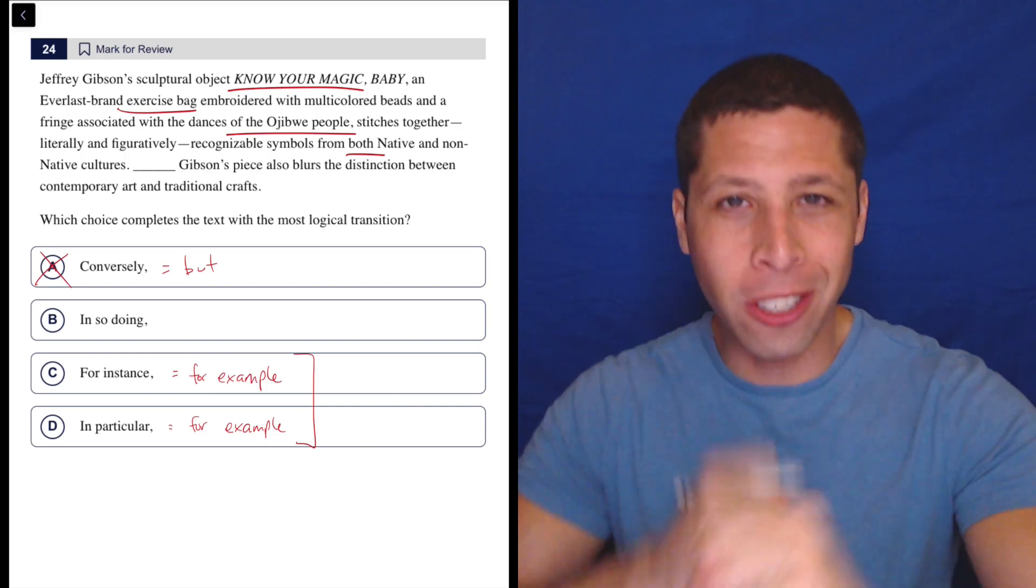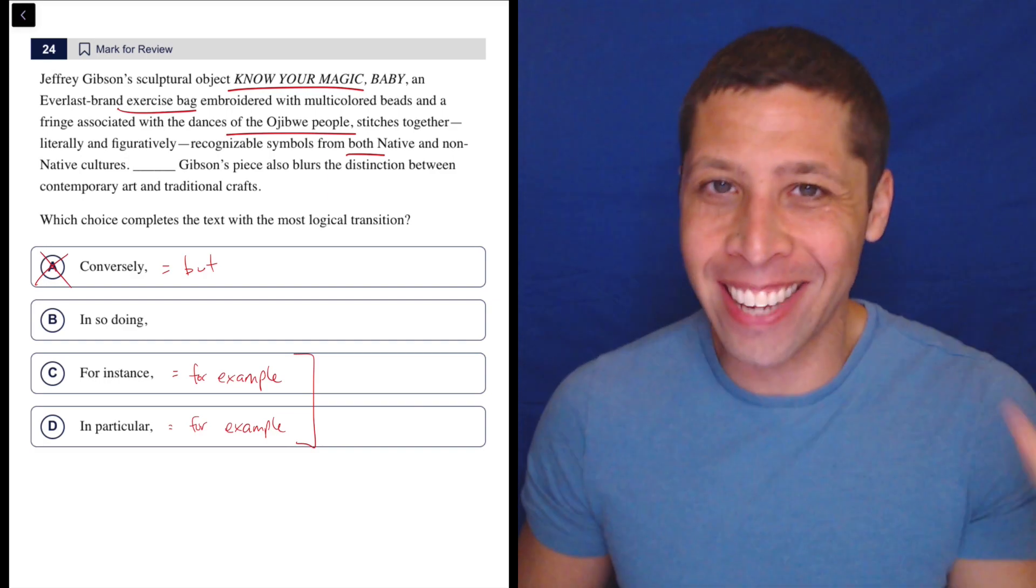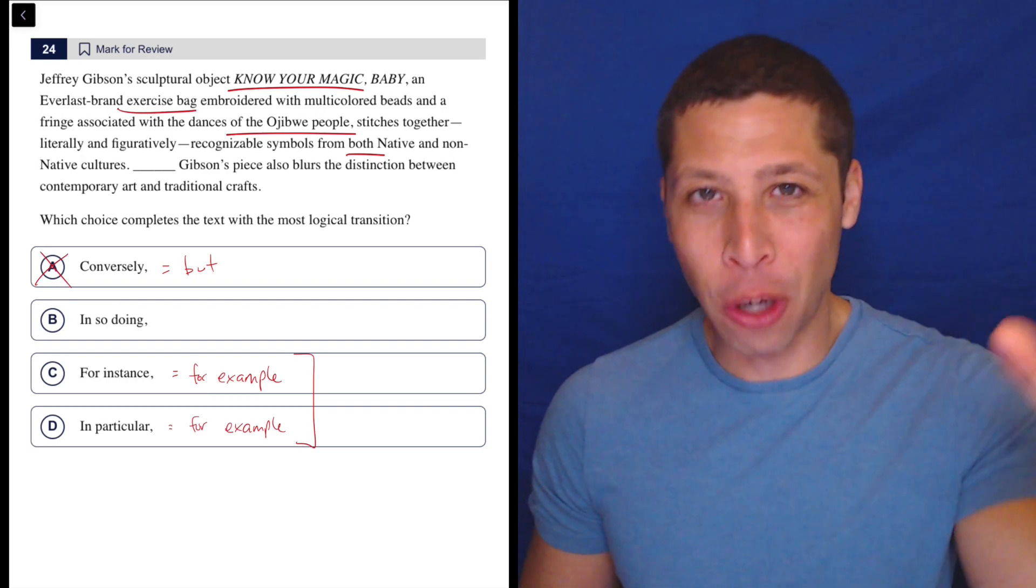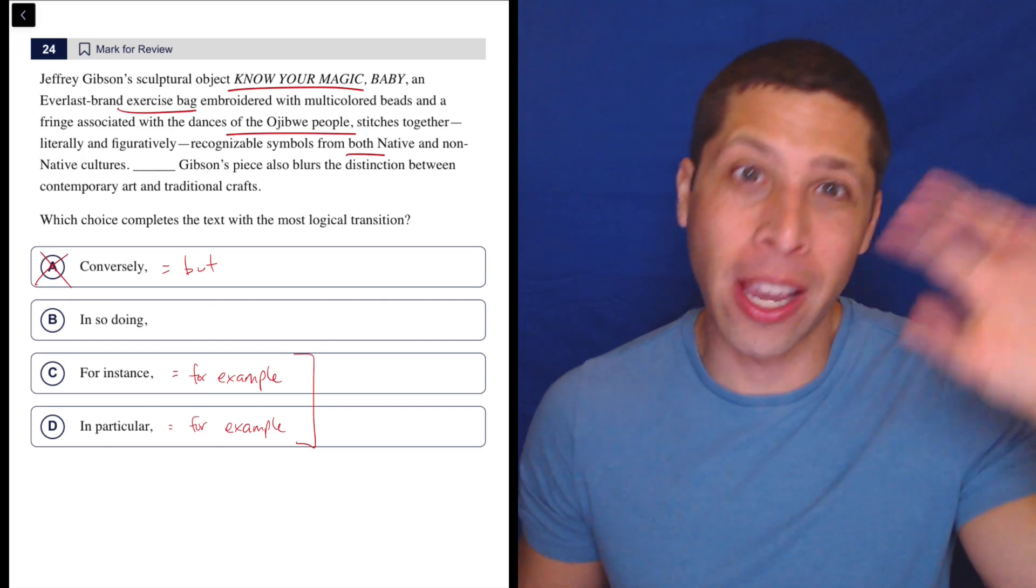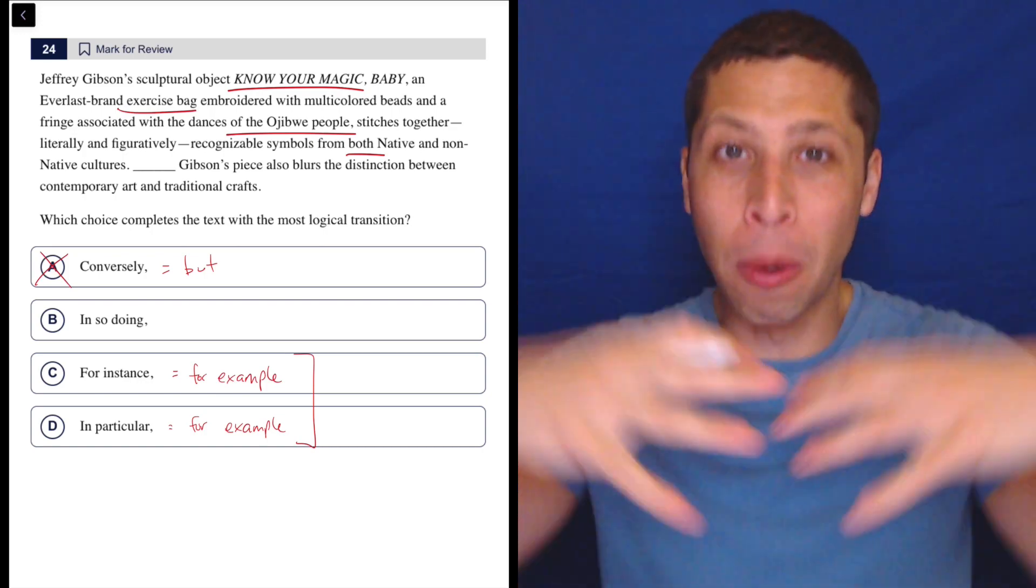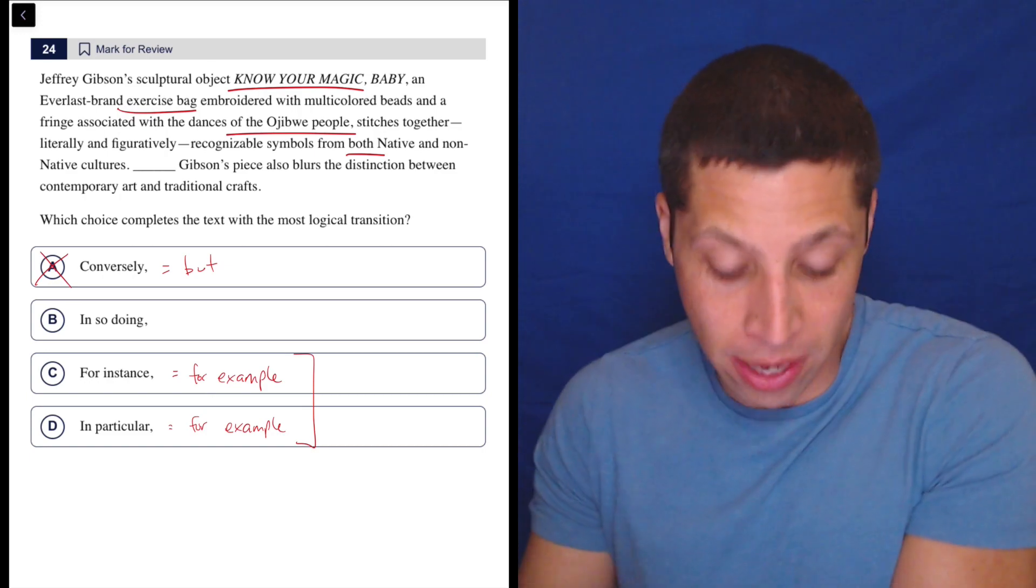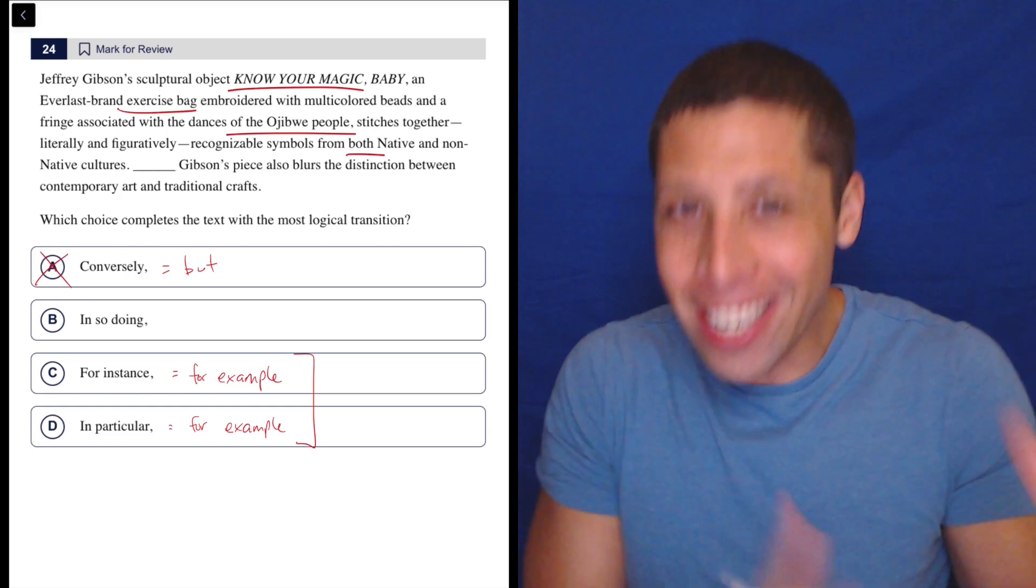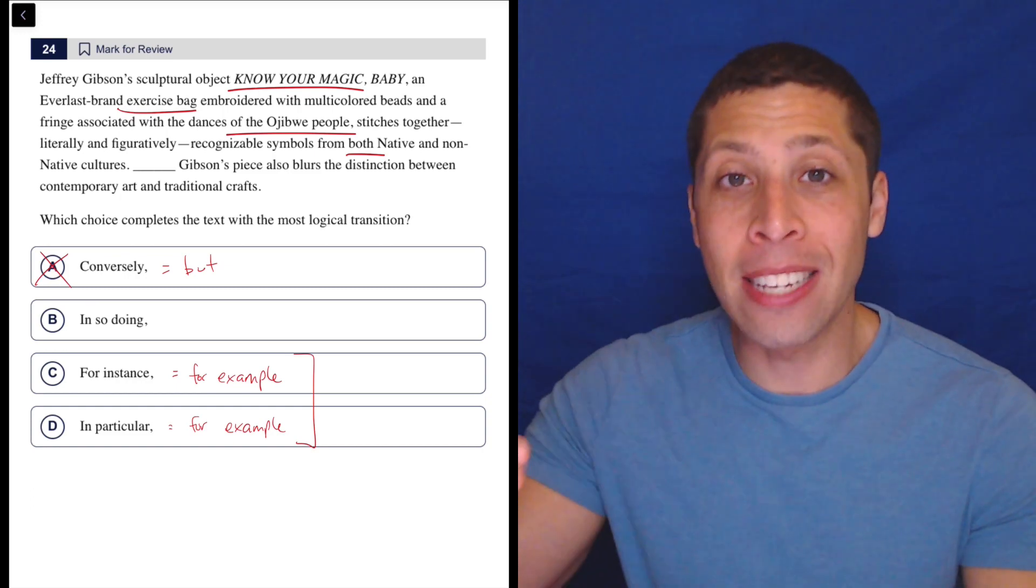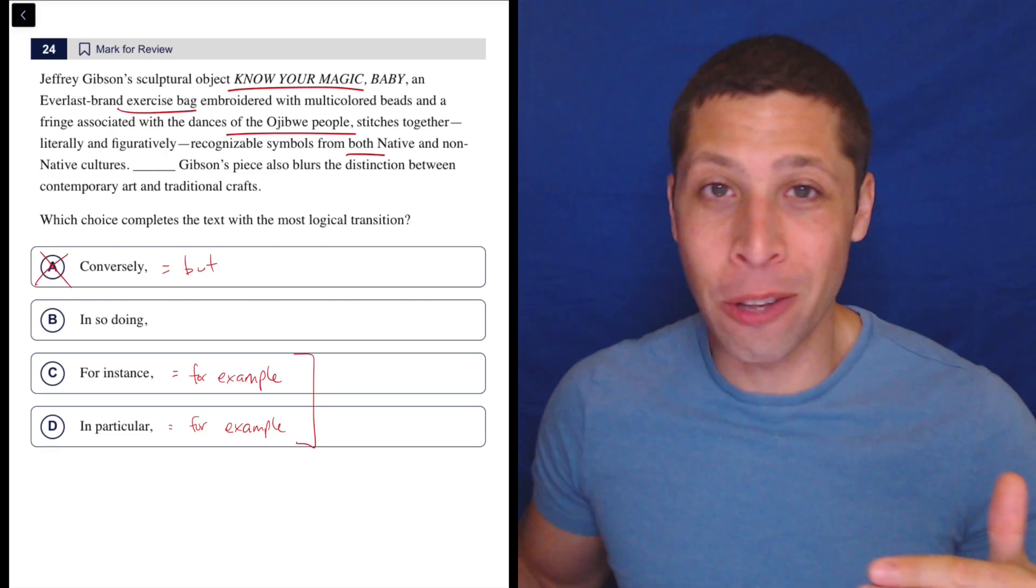It's almost like they kind of reversed the transitions here to throw you off. They are providing an example, but that's how they started this passage. Then they kind of told us what it was an example of, right? So the example is, okay, we're taking the exercise bag, we're taking the native dancing clothes, and we're blending those together. And that is an example of us blending native and non-native cultures. So it's reversed. There is an example, but that doesn't mean that that's what goes in the blank because the blank needs to be an example that follows in the rest of that second sentence.